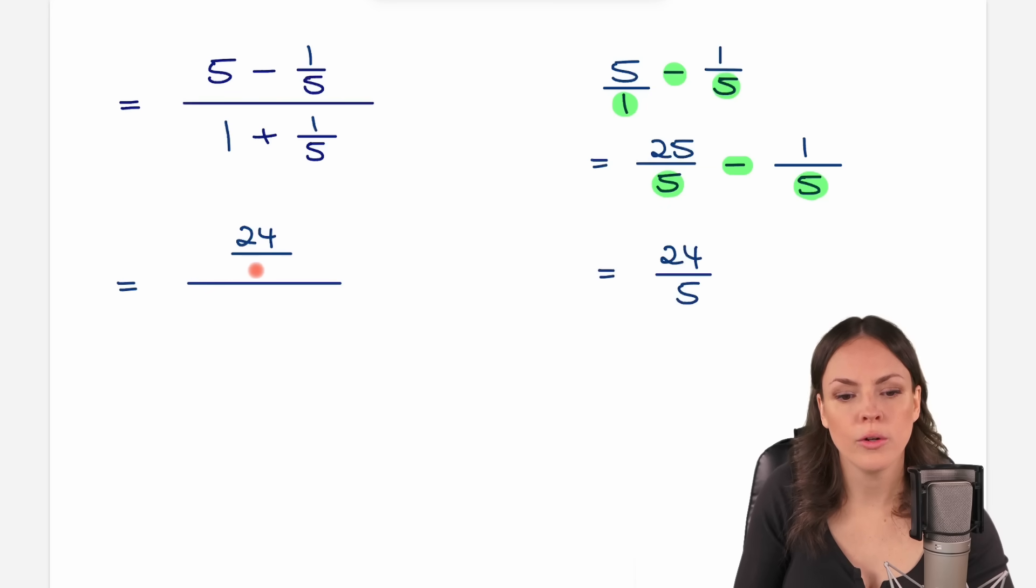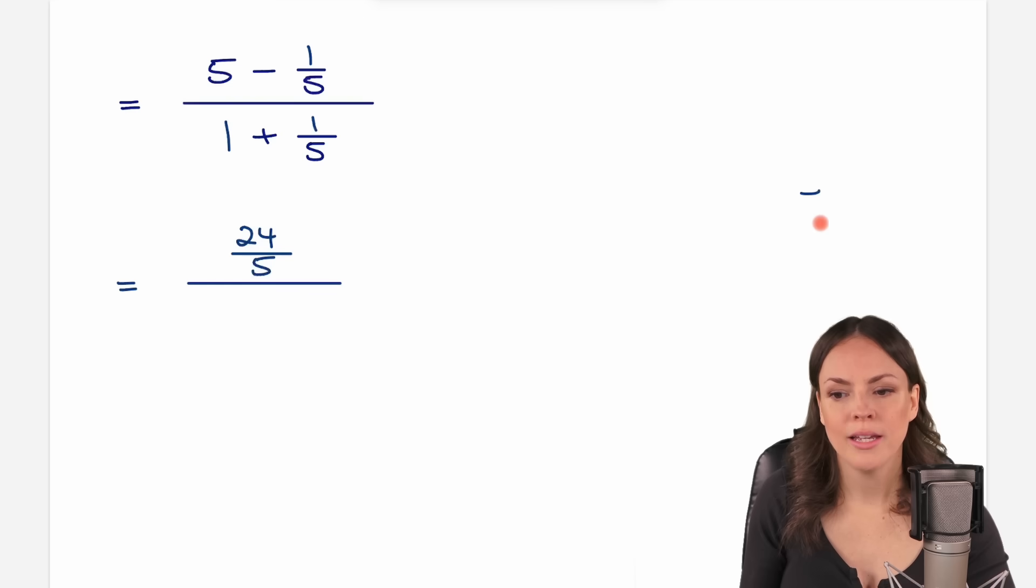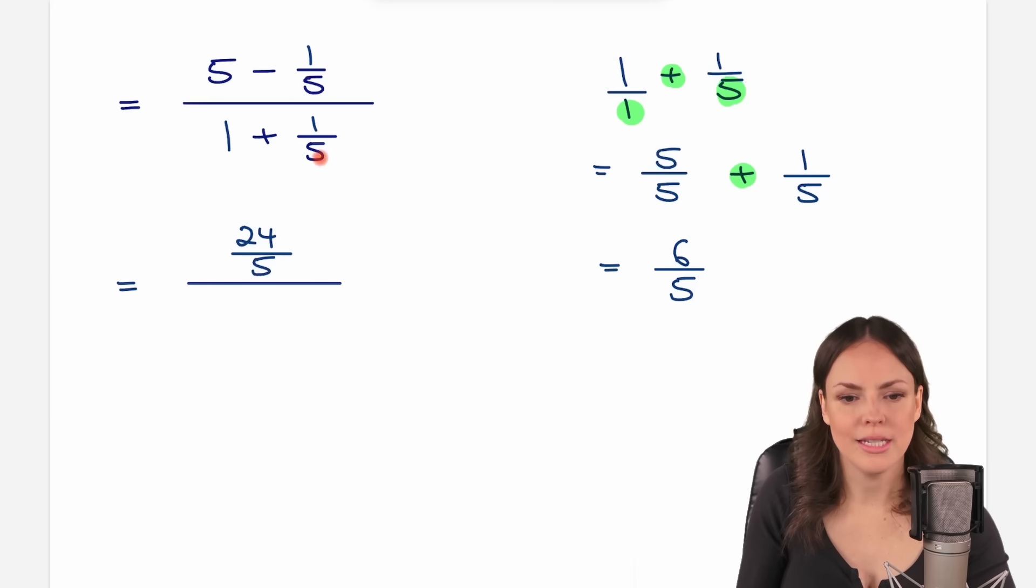And the same now with the denominator. What did we have there? We have 1 plus 1 over 5. The same rules for adding a number and a fraction. We write this as a fraction as well. We have 1 over 1 then. We find a common denominator in the same way we just did. 1 times 5 gives us 5. We have to rename this fraction. We also have to multiply by 5, so 1 times 5 equals 5 here as well. We don't have to change the second one, and now we are allowed to add these two fractions. We have the 5 as a denominator, and 5 plus 1 gives us 6. This is the result of this calculation, so we have 6 over 5.